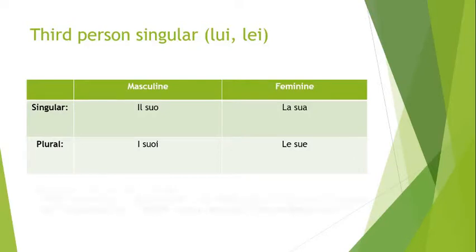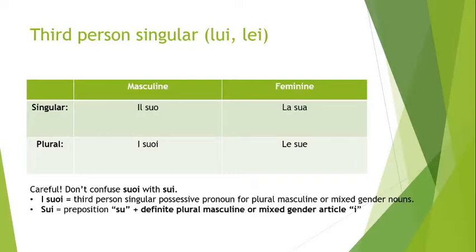Be careful not to confuse 'suoi' with 'sui.' 'Su' is the preposition for 'on,' and 'i' is the masculine plural definite article — when they're next to each other they combine, as we learned last lesson, to make 'sui.' But 'suoi' with the 'o' is the possessive pronoun, masculine plural. Once you see it in context you'll recognize it right away — 'suoi' is the possessive pronoun; 'sui' is the preposition plus the article.